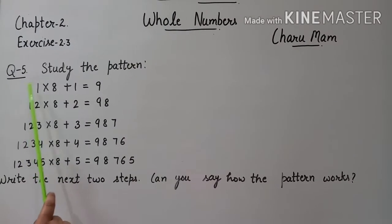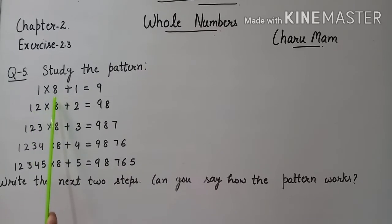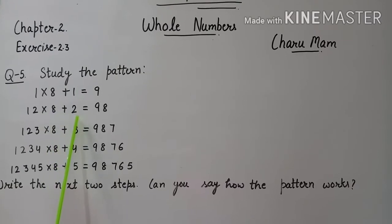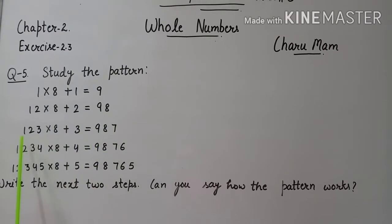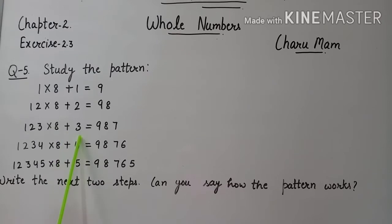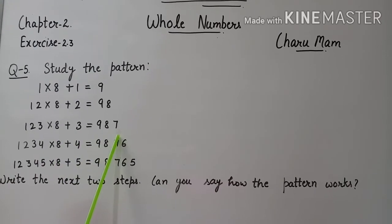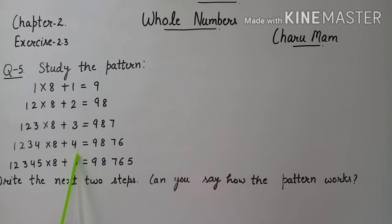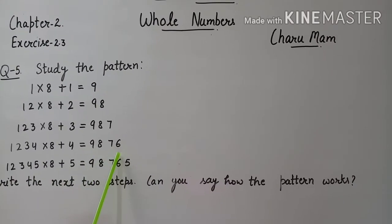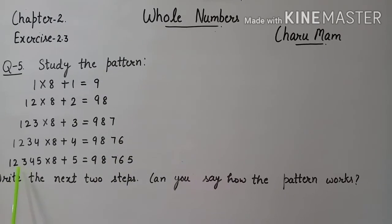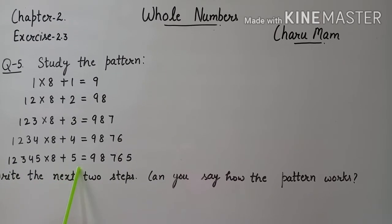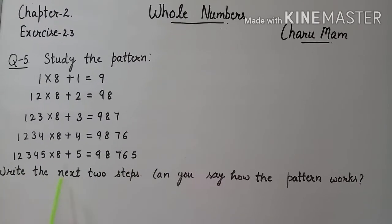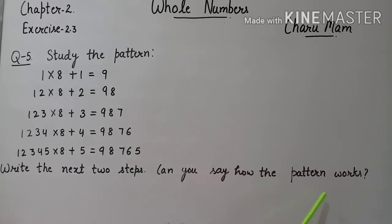Now, question 5: Study the pattern. 1 × 8 + 1 = 9. 12 × 8 + 2 = 98. 123 × 8 + 3 = 987. 1,234 × 8 + 4 = 9,876. Then 12,345 × 8 + 5 = 98,765. Write the next two steps. Can you see how the pattern works?